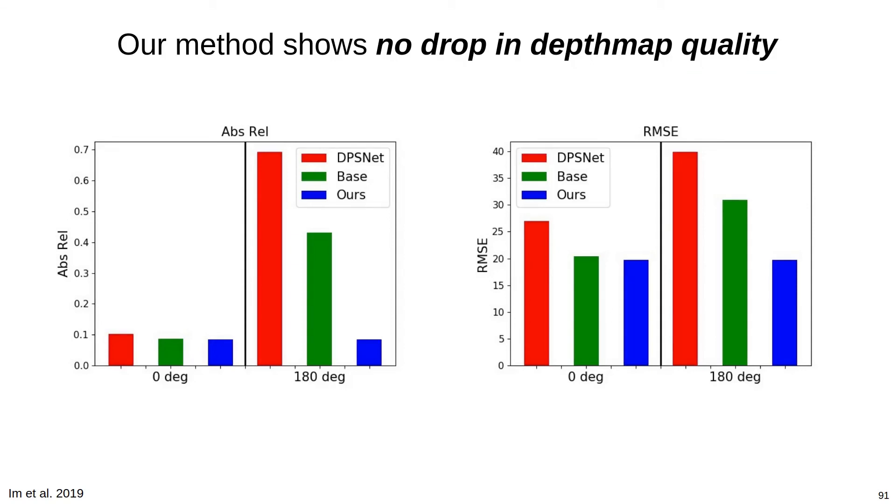Quantitatively, we show no change in absolute relative depth error or RMSE depth errors across the test set of the GTA SFM dataset when rotating images. We perform better than DPSNet under both scenarios, as well as a base network, shown in green, that is identical to our network but with a standard feature extractor that lacks viewpoint compensation.